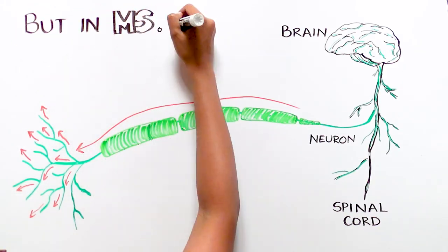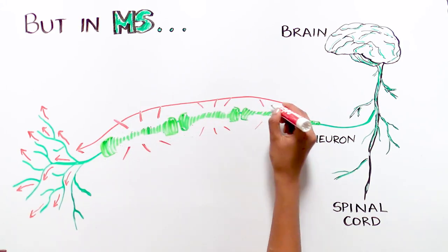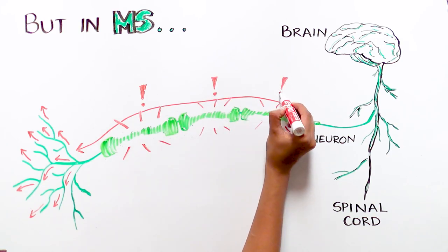In patients with MS, the myelin insulation around the neurons becomes damaged, so the signals from your brain to the rest of the body go haywire.